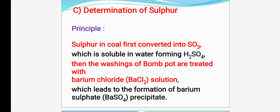How to determine percent sulfur? What is the principle behind it? Just recall the bomb calorimeter experiment that we have seen. We have to perform the bomb calorimeter experiment for finding the determination of sulfur. First, we will see the principle, then we will proceed toward the method — that is, the determination.